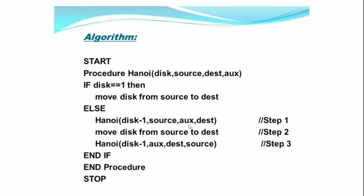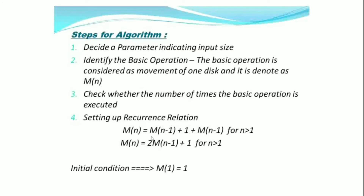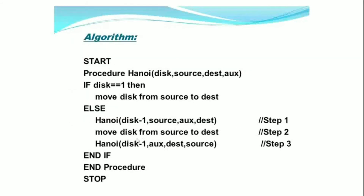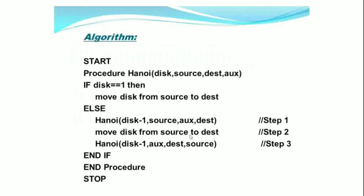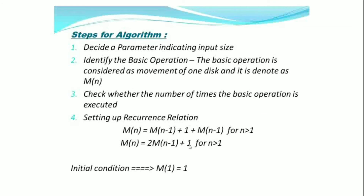As we see in step 1, since it is a function call, we are considering it as m(n-1). In step 2, there is a movement from source to destination and we are taking it as 1. In step 3, there is also a function call and we are considering it as m(n-1). Therefore, m(n) equals, by adding m(n-1) plus m(n-1), we get 2m(n-1) + 1, for n greater than 1.